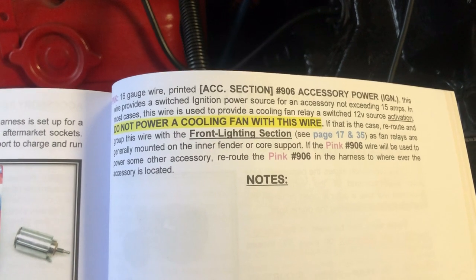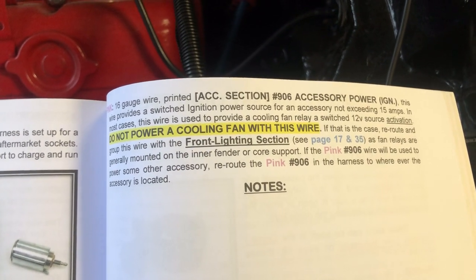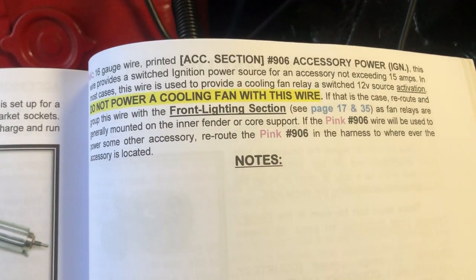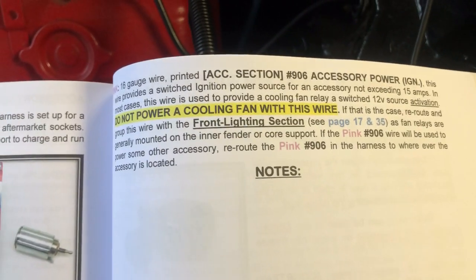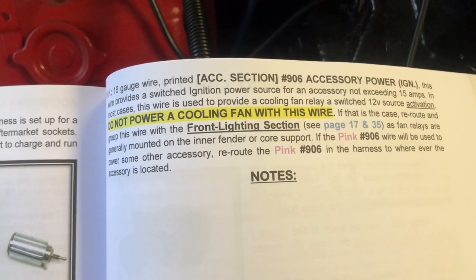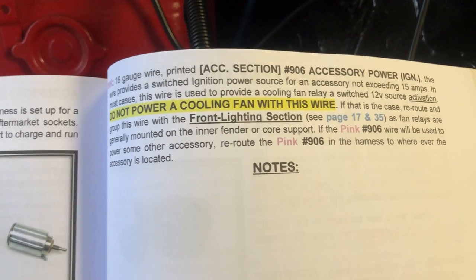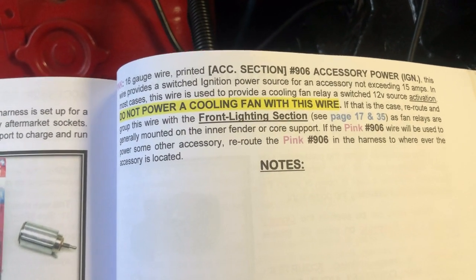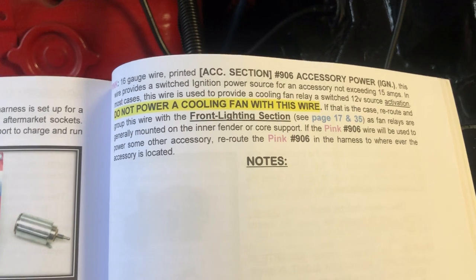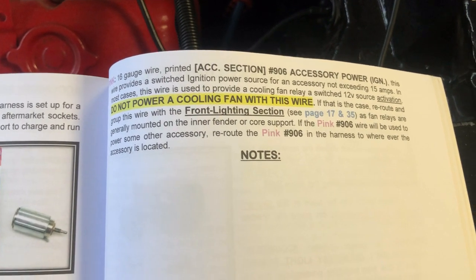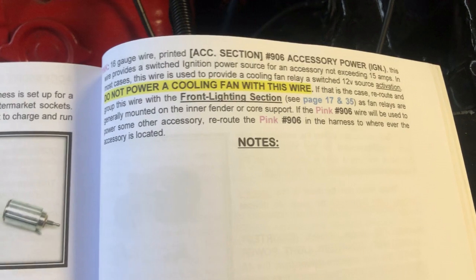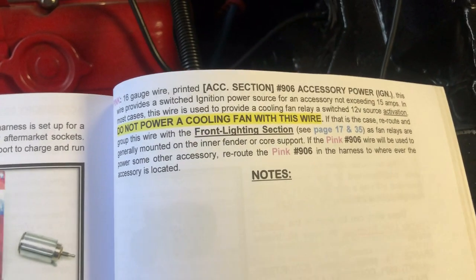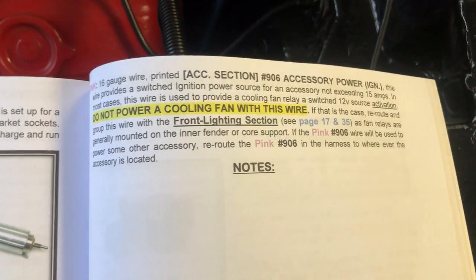The wire we'll be using is in the accessory section, wire 906 accessory power ignition. In the Painless series, if you see ignition at the end of a wire name, that means power is on with the key, not power on all the time. If it's power on all the time, it'll say battery. Now this one is wire number 906, it's a 16 gauge wire. It says specifically do not power a cooling fan with this wire directly, so you have to use a relay and that's what we did.